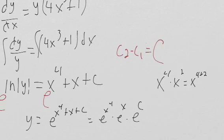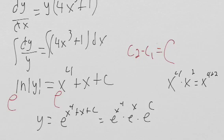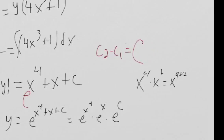And the reason that ends up being nice is because oftentimes e to the c in these problems ends up being a nice number, whereas c does not. So what we do is we just rename this whole e to the c as its own new constant c again. We're just going to use c again, which is why this gets confusing. So what we end up with is e to the x to the 4th times e to the x, and then we usually just put the constant c out front.